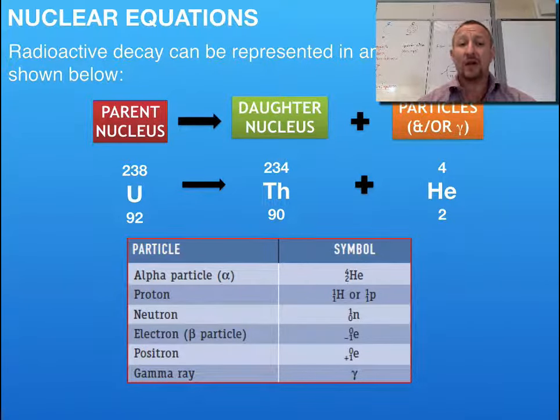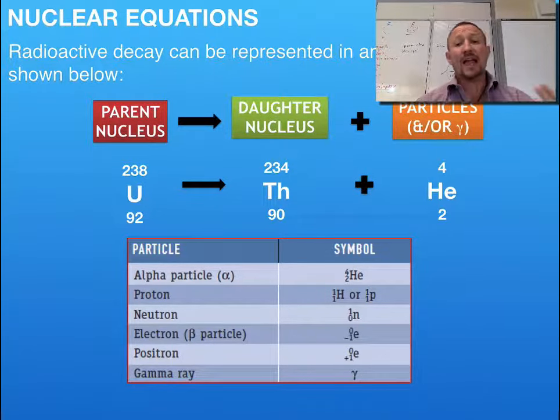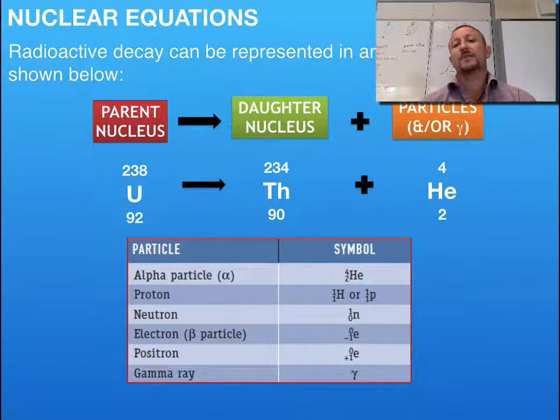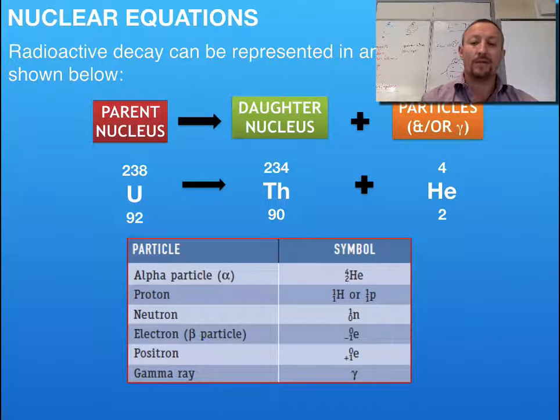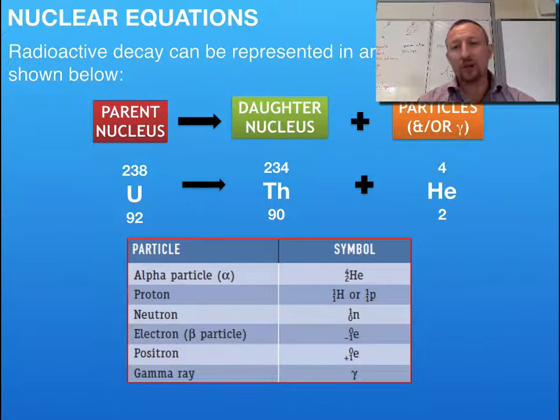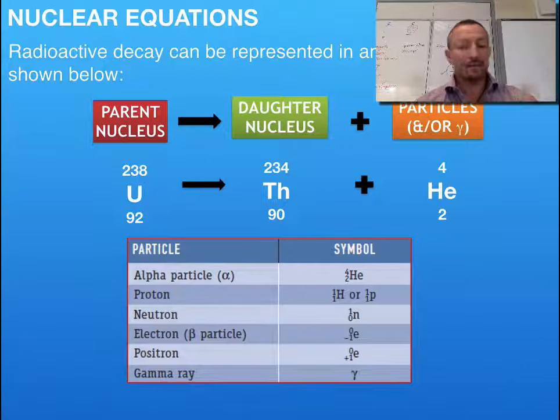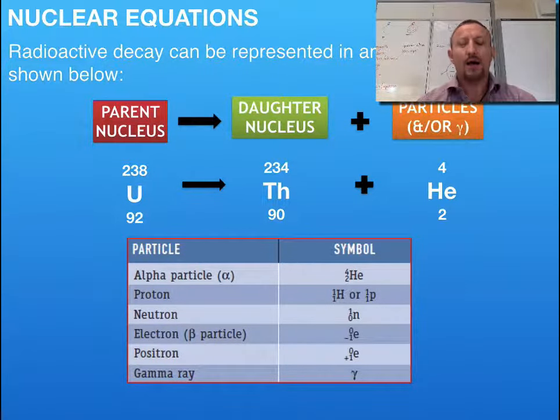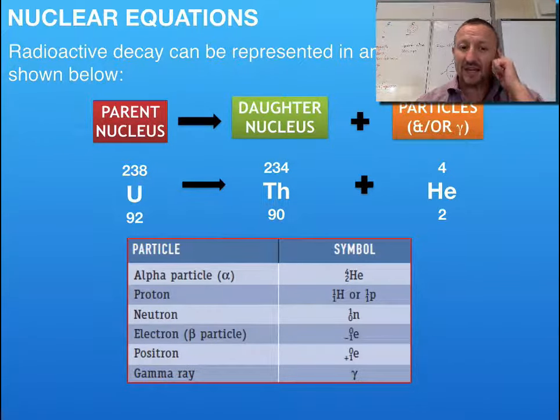And here's the list of particles that we can have. We can have an alpha particle, we can have a proton which is going to be emitted, we can have neutrons emitted, we can have electrons which is a beta particle, we can have positrons. Now positrons is the opposite of an electron. And you'll notice that it's got a plus one charge rather than an electron which has got a negative charge. These two things come together, they're basically antimatter. Two things come together, they disintegrate, they disappear. And then on top of that we've got our gamma ray radiation which is going to be given out.